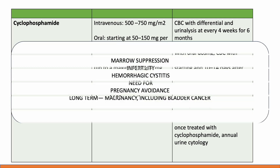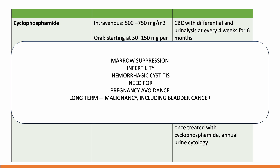Key side effects of cyclophosphamide include marrow suppression, infertility — requiring caution in young patients — hemorrhagic cystitis, and teratogenicity necessitating pregnancy avoidance. In the long term, due to the risk of malignancy including bladder cancer, annual urine cytology is recommended.